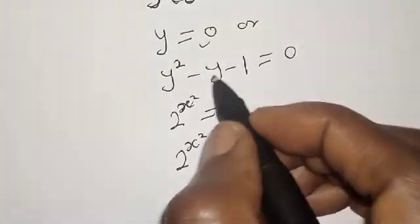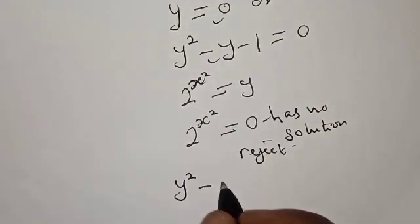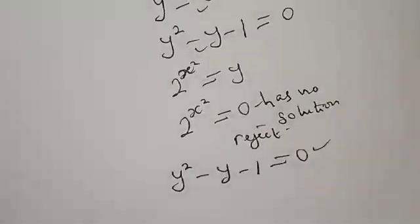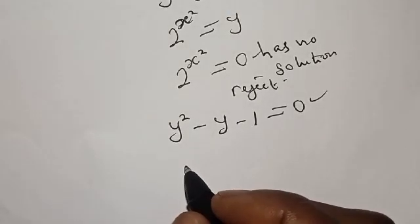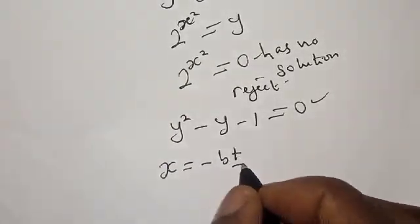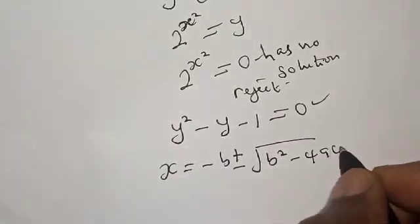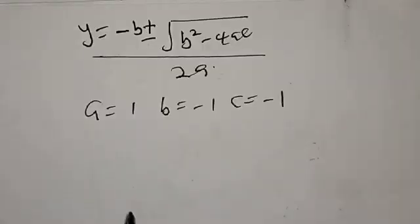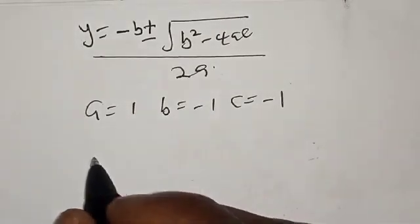Then let's come to the other factor: y squared minus y minus 1 is equal to 0. This is a quadratic equation, and let's solve it using the quadratic general formula. From the quadratic formula, we have y equal to minus b plus or minus square root of b squared minus 4ac over 2a. Here, a equals 1, b equals minus 1, and c equals minus 1.